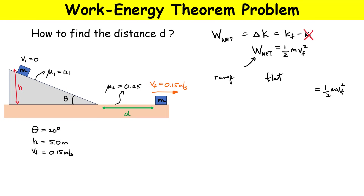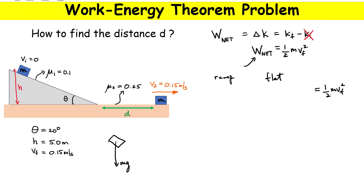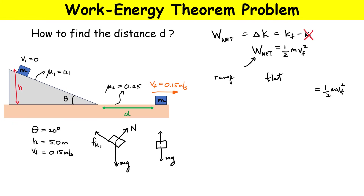On the ramp we consider the forces acting on the block: we've got the weight mg acting down, a force of friction F_k1 acting opposite to the motion, and a normal force N1. On the flat section we have the weight acting down, a normal force N2, and a different coefficient of kinetic friction — 0.25 — because it's a different material. The normal forces N1 and N2 will be different on the ramp versus the flat section.